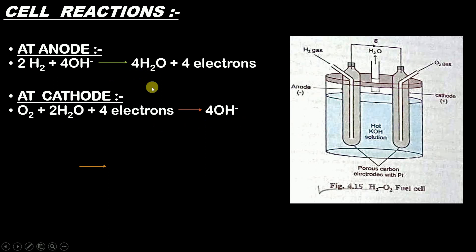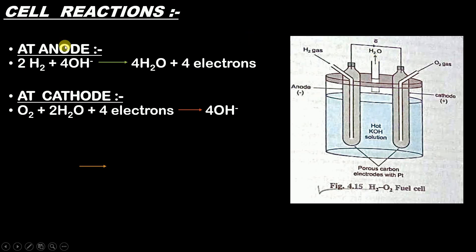These 4 OH⁻ ions are reused by the anode. Notice that the cathode only takes 2 H2O molecules out of the 4 produced at the anode, leaving 2 extra H2O molecules. These extra 2 H2O molecules go into the KOH solution, and since the KOH solution is hot, these H2O molecules evaporate — which is why space is given for evaporation.